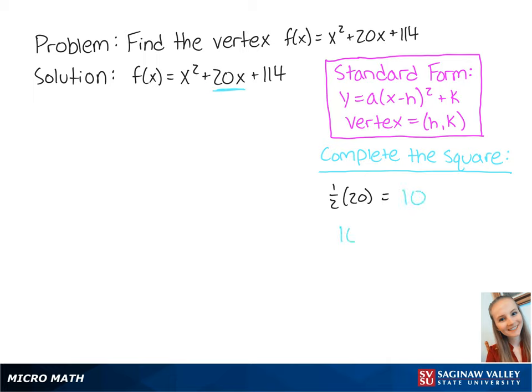Then we take 10 and square it, which equals 100. Now we can manipulate the equation to get f(x) = x² + 20x + 100 + 14.